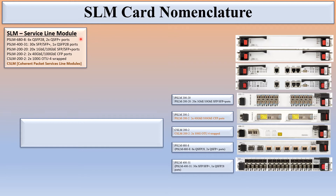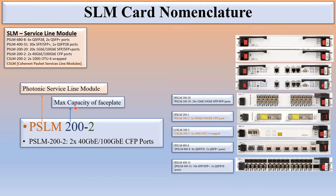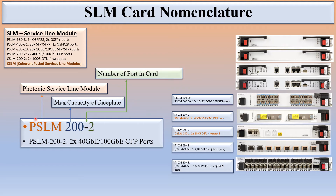Let's understand the meaning of this nomenclature. PSLM 200-2 has 2 x 40 GB or 100 GB CFP ports. The first four characters — PSLM — indicate the name of the card, which is Photonic Service Line Module. The next three digits indicate the maximum capacity of the faceplate, meaning maximum capacity of this circuit pack.